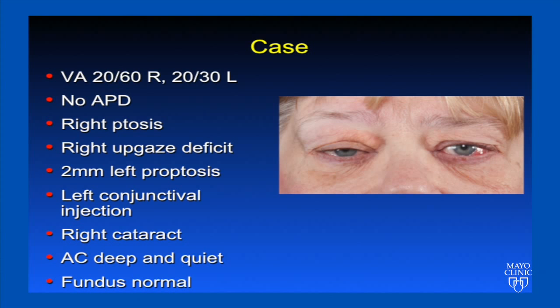Her clinical exam was significant for a visual acuity of 20/60 on the right and 20/30 on the left. She did not have an afferent pupillary defect. She does have right ptosis, as seen in the slide, as well as a right upgaze deficit. She also had two millimeters of left proptosis and left conjunctival injection temporally. She had a right cataract, which explained the 20/60 vision, and the remainder of her intraocular examination was normal.